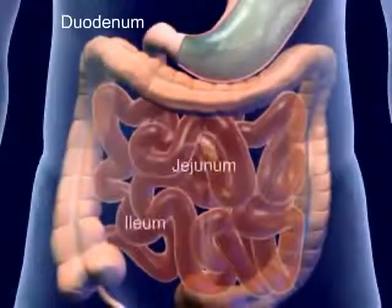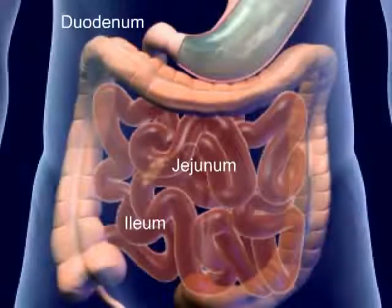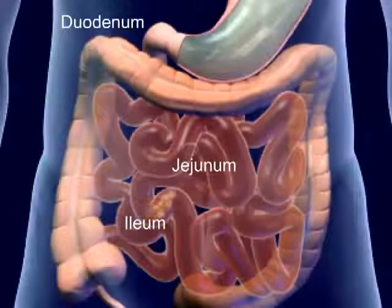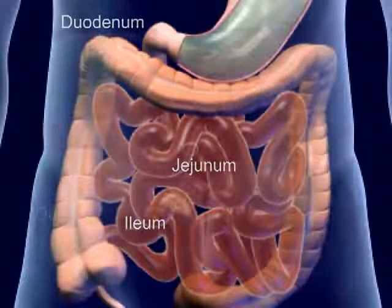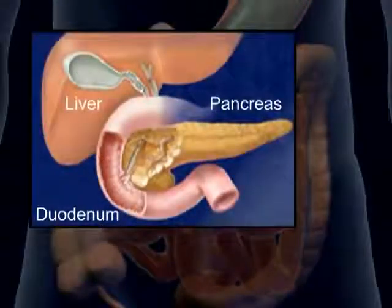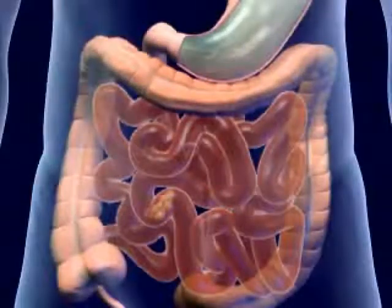The major portion of absorption and digestion occurs in the small intestine. The mucosa secrete enzymes that supplement the digestive enzymes of the pancreas and liver, completing the chemical process of digestion.